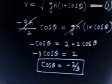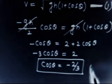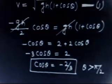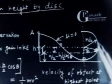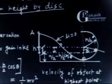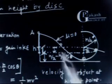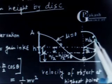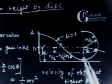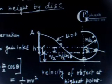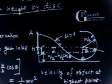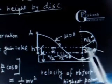A negative cosθ means theta is greater than π/2, so the angle is obtuse. This means the object does not lose contact in the lower half of the circle. It will only lose contact after it has gone past the horizontal position, i.e., in the upper part of the circle.